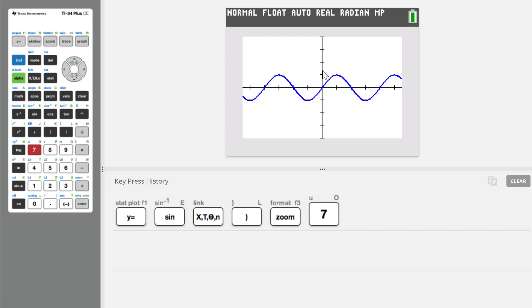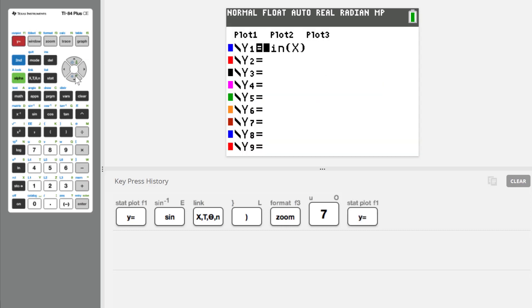And it counts by 1s on the y-axis. Let's now go back to the y equals area and add in 3 sine x. y equals 3 sine x. Let's add that to our graph.